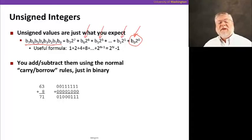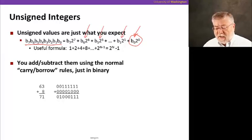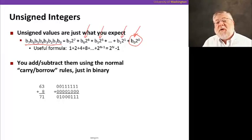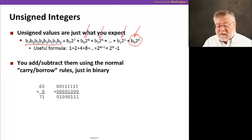Namely 128 plus 64 plus 32, all the way down to plus one. So let's take a look at a simple example of addition and subtraction using basically the normal carry-borrow rules that we use for decimal addition and subtraction. Only in this case, since we have base-two numbers, we'll be doing things with only the digits zero and one.